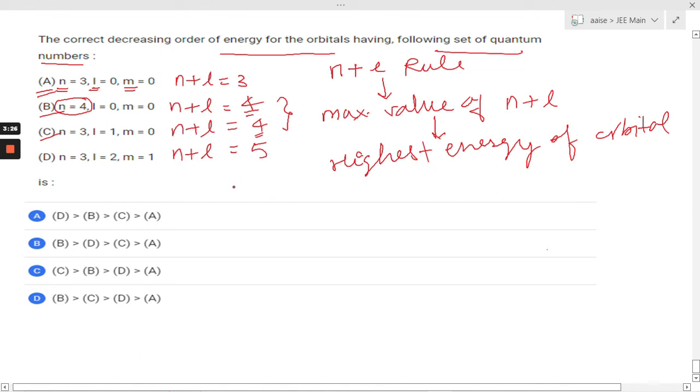So we are going to arrange them in decreasing order of energy. So highest is D, then we are having B, then we are having C, and A having the lowest energy. So D will be the correct answer. Okay, hope you understand it and thanks for watching. Have a good day.